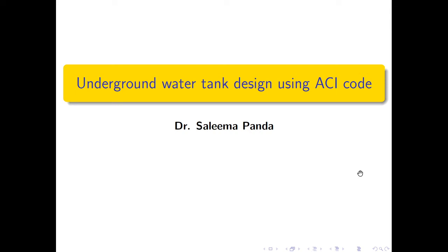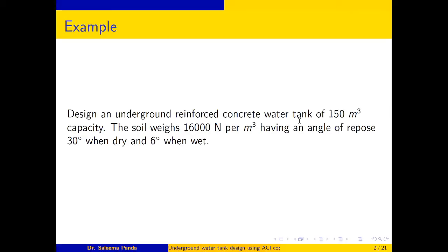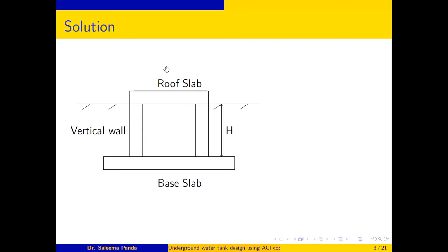In this video I am going to explain underground water tank design using ACI code. I am going to design a tank with a capacity of 150 cubic meters where the soil unit weight is 16,000 Newton per cubic meter. The angle of repose is 30 degrees when dry and 6 degrees when wet. The three parts I am going to design are: the roof slab, the vertical walls, and the base slab.